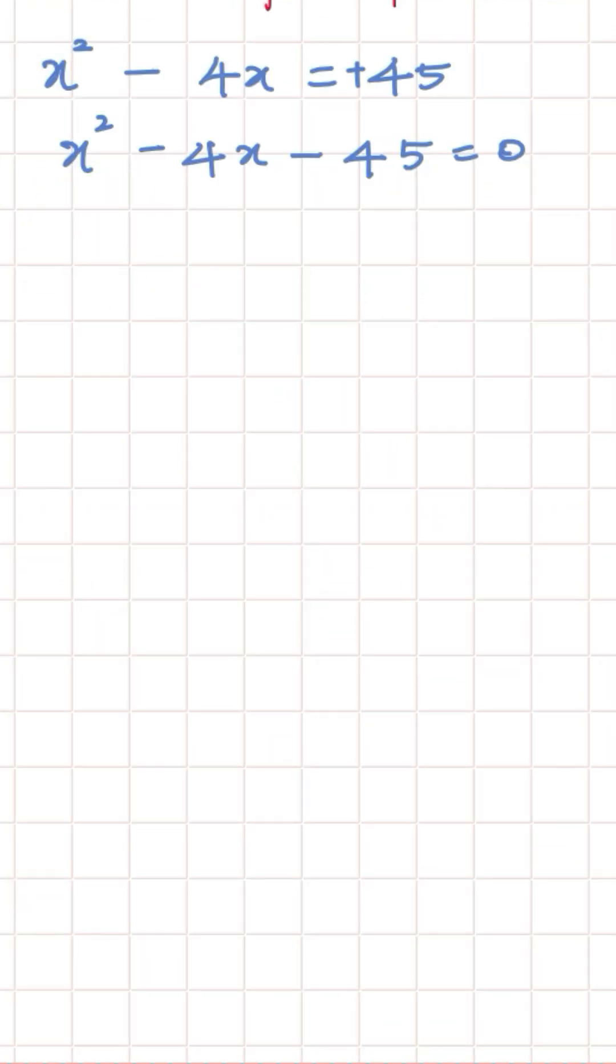What we do now, there are two methods. First, the formula method. This is a equals 1, b equals minus 4, c equals minus 45. The formula is minus b plus or minus square root of b square minus 4ac divided by 2a.